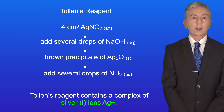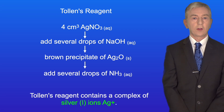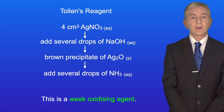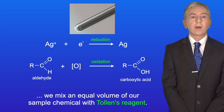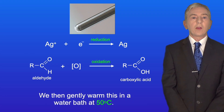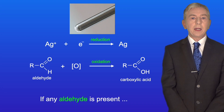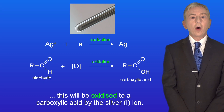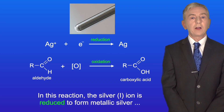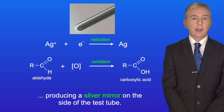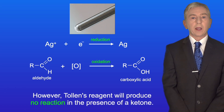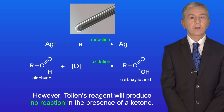Tollens' reagent contains a complex of silver(I) ions, Ag⁺, and this is a weak oxidizing agent. To test for the presence of an aldehyde, we mix an equal volume of our sample chemical with Tollens' reagent and gently warm it in a water bath at 50°C. If any aldehyde is present, it will be oxidized to a carboxylic acid by the silver(I) ion. In this reaction, the silver(I) ion is reduced to metallic silver, producing a silver mirror on the side of the test tube. However, Tollens' reagent will produce no reaction in the presence of a ketone.